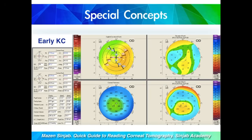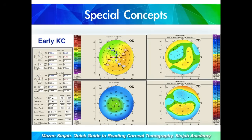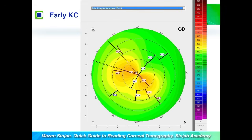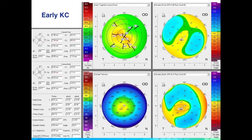This is an example of early keratoconus. Looking at the anterior curvature map, there is an abnormal inferior-superior difference. In addition, the posterior elevation map using the best fit sphere shows abnormal elevations, and if we switch to the best fit toric ellipsoid, the posterior elevation map also shows high abnormal elevation values. In another case of early keratoconus, the anterior curvature map shows skewed radial axis above 22 degrees, and the posterior elevation map shows abnormal high values.